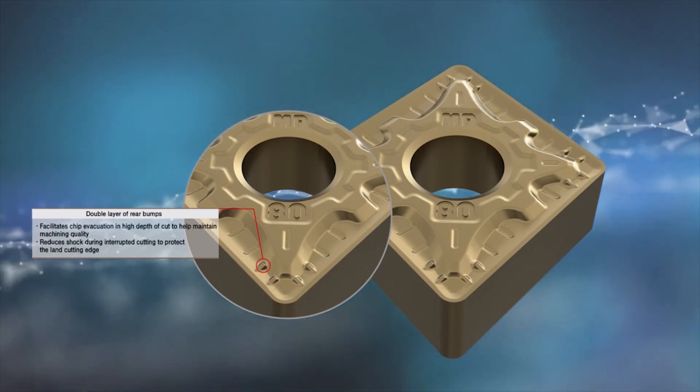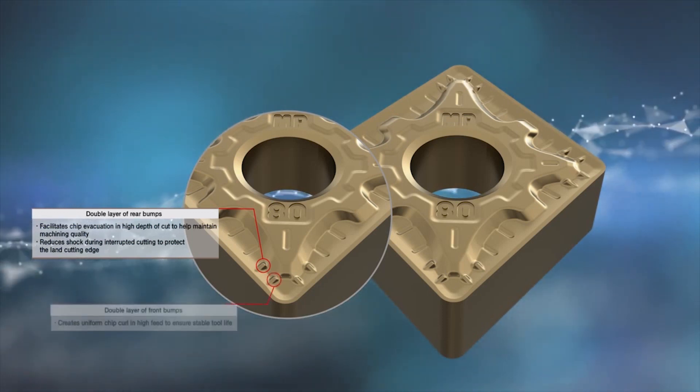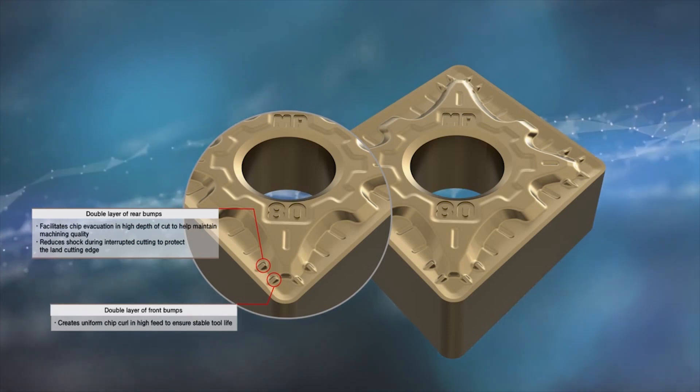Double layers of bumps in the rear side facilitate chip evacuation and high-depth cuts and help maintain machining quality while protecting the land cutting edge by reducing shock and interrupted cutting.